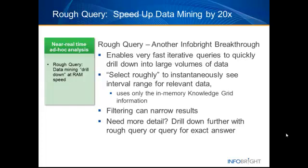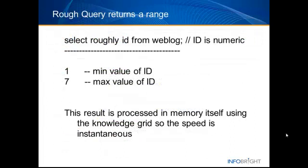How do we use rough query in SQL? Select roughly ID from web block. In this example, the min value is 1 and the max value is 7. The keyword roughly is used to evaluate the columns indicated. Roughly is used to tell the query optimizer to use the knowledge grid only and to return the range of values.